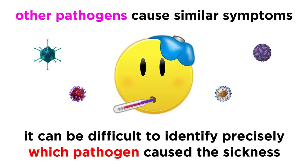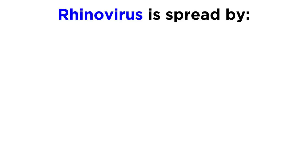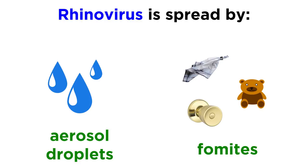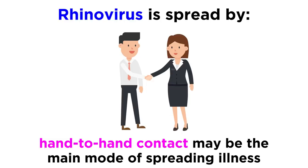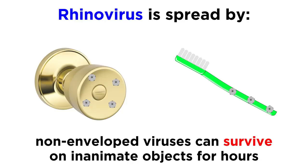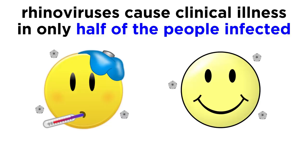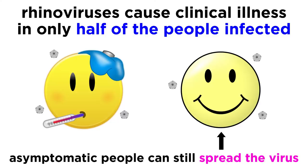Thinking about rhinoviruses out in the wild, there are two main mechanisms by which they are spread: either by breathing in aerosol droplets, or by fomites, which means on hands or contaminated inanimate objects. Some experts think that hands are the major vector for viruses, and direct person-to-person contact is the predominant mode of spreading. Plus, these non-enveloped viruses are extremely stable and can survive on things like doorknobs and toothbrush handles for hours. At the same time, we know that rhinoviruses cause clinical illness in only half of the people infected, though asymptomatic people can also spread the virus, even if they make much less of it.